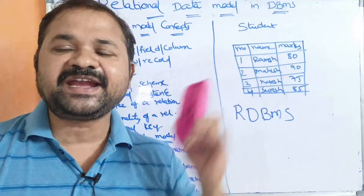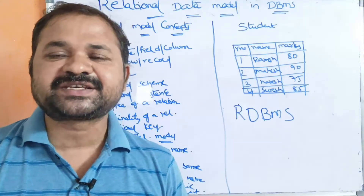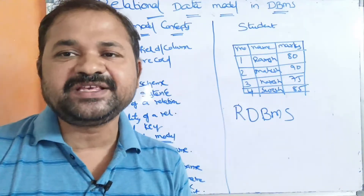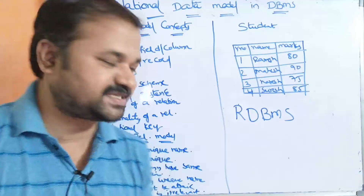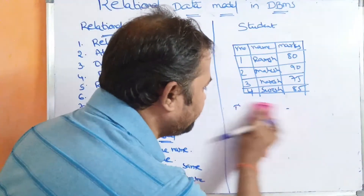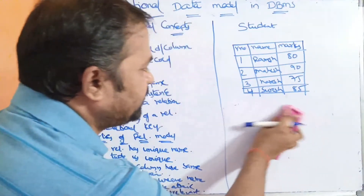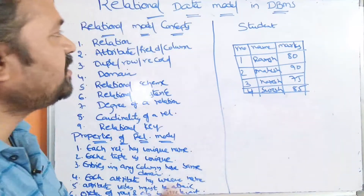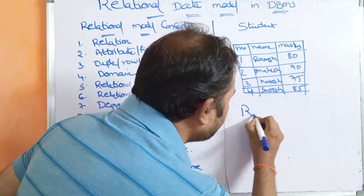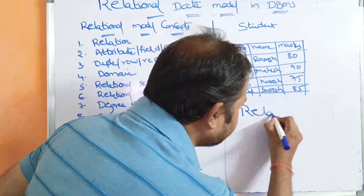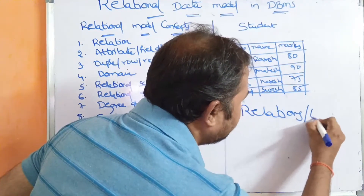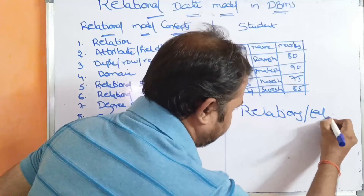Relational data model means information will be stored in relations. The name itself specifies the meaning — relational model means data will be stored in relations. A relation can also be called as a table.